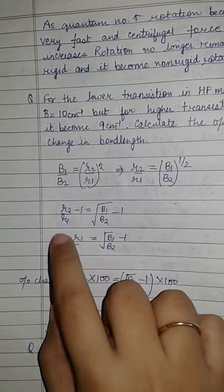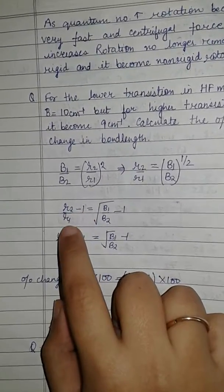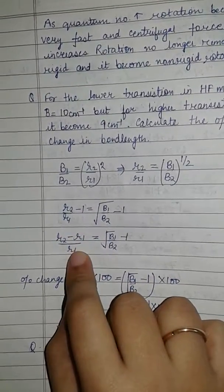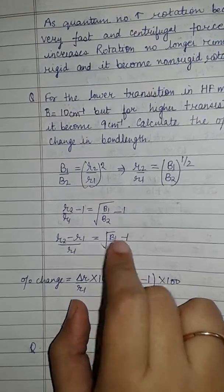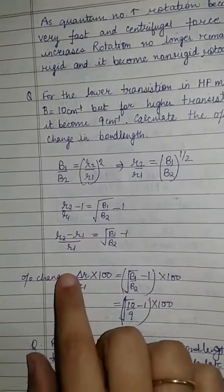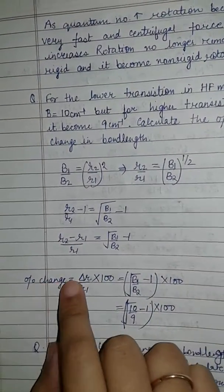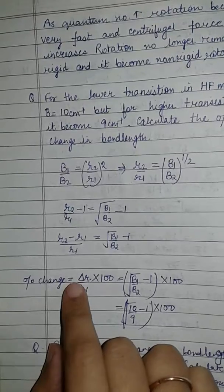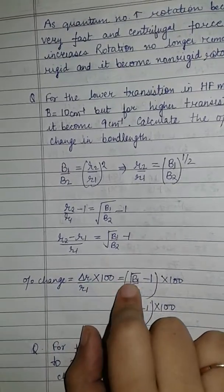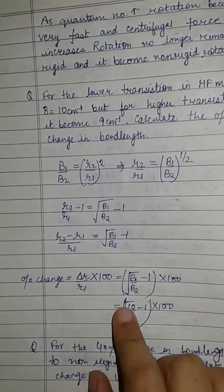Subtracting 1 from both sides, we get R₂/R₁ − 1 = √(B₁/B₂) − 1. This gives us (R₂ − R₁)/R₁ = √(B₁/B₂) − 1, which is ΔR/R₁. Multiplying both sides by 100, the percentage change in bond length equals (√(B₁/B₂) − 1) × 100.